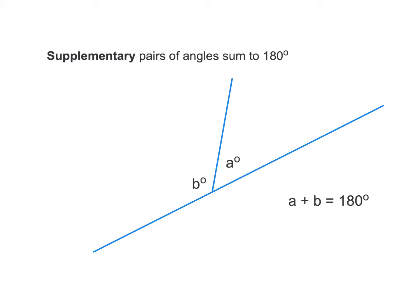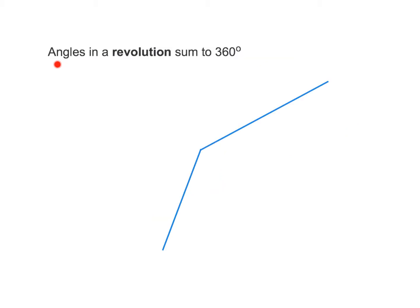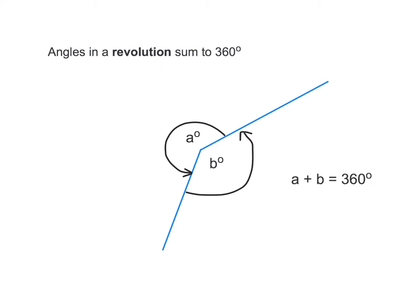We could also write it like this: angle A added to angle B must equal 180 degrees. The next one is angles in a revolution, which sum to 360 degrees. A revolution is going right around a protractor or a circle once, equaling 360 degrees. So we have angle A and angle B must equal 360 degrees, and therefore a revolution. We write that as A plus B equals 360 degrees.